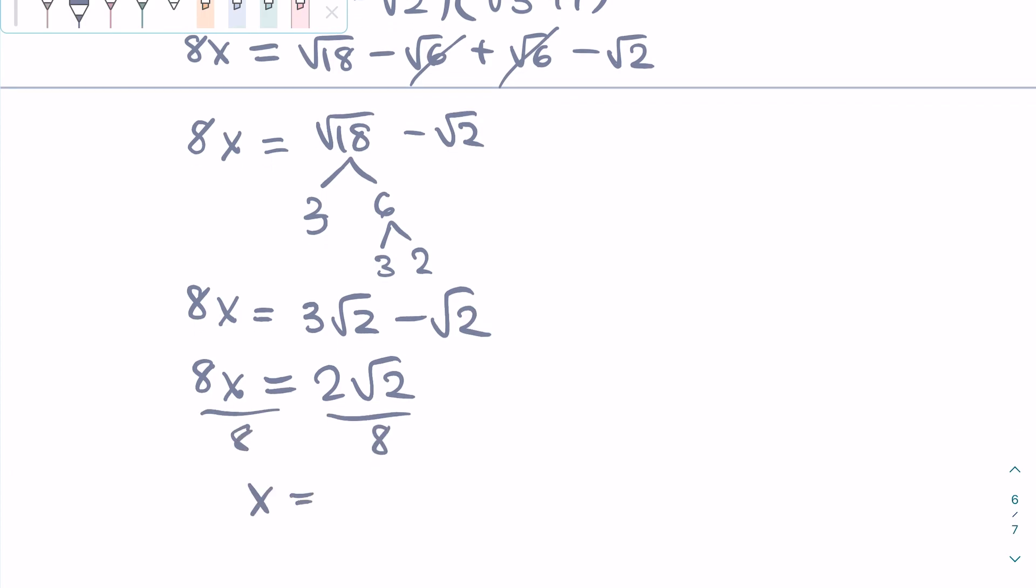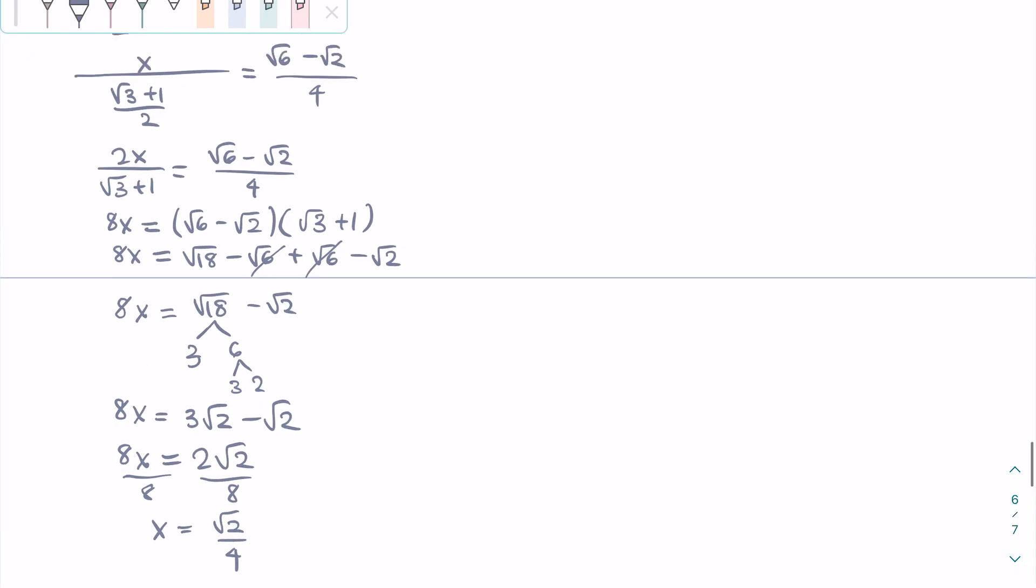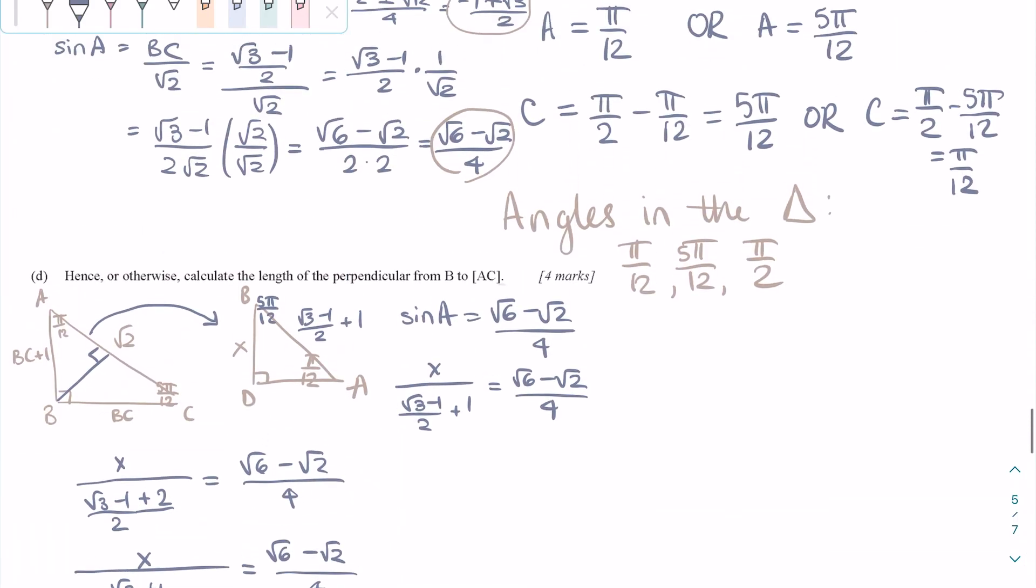After a lot of simplification, we get X equals 2 square root of 2 over 4. And that's the answer for part D, which is the length of the perpendicular.